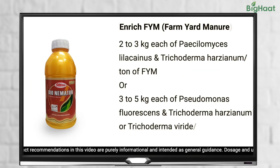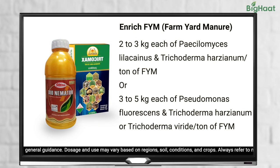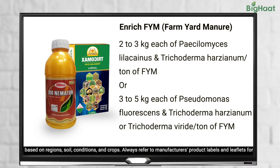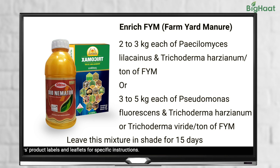You can also use 2 to 3 kgs of Basiliomyces and Trichoderma each in 1 tonne of FYM, or farmyard manure. Remember to leave this mixture in shade for 15 days with adequate moisture to aid the multiplication of the beneficial microbes. You can use this mixture before transplanting the tomato seedlings.